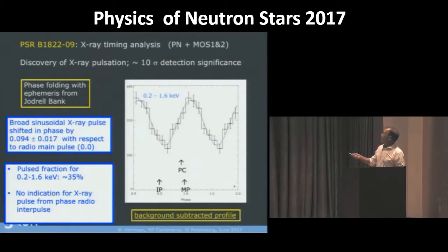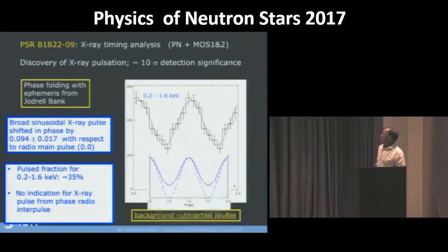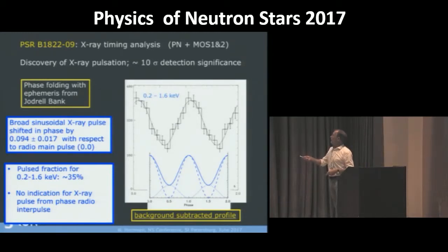And we don't see here structure at the interpulse. But that is not strange. Because you should realize, if they both emit and one is strong and one is weak, it sums up to this profile. So it doesn't tell us now that we don't have emission from the interpulse.